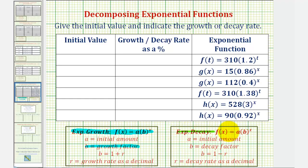For exponential decay, the base B is called the decay factor, which is equal to one minus R, where R is the decay rate as a decimal. Because we're subtracting R, the base is always less than one, and therefore we have a decreasing function.